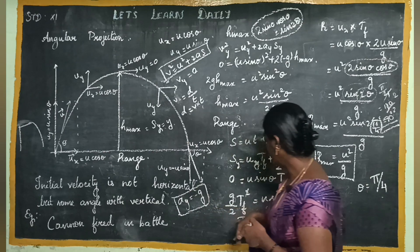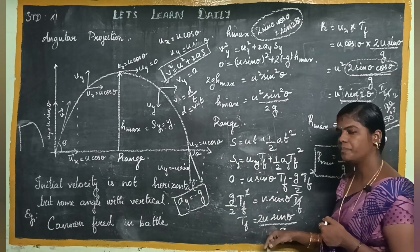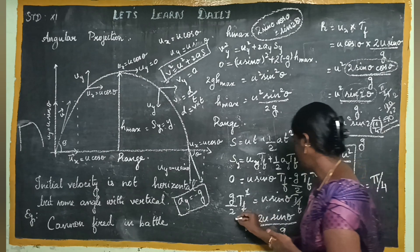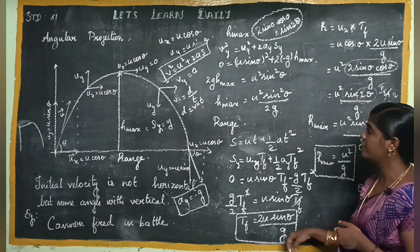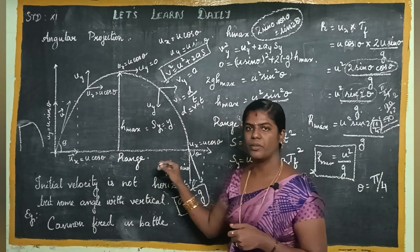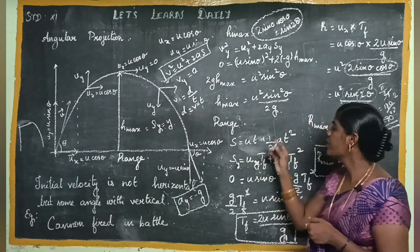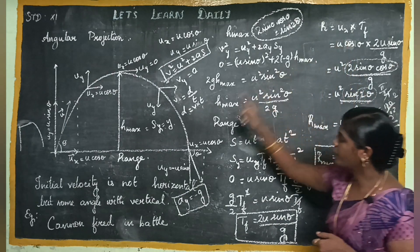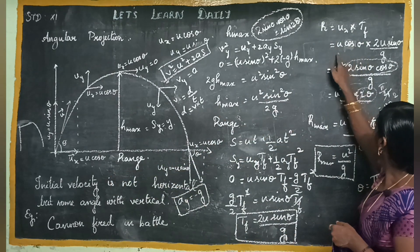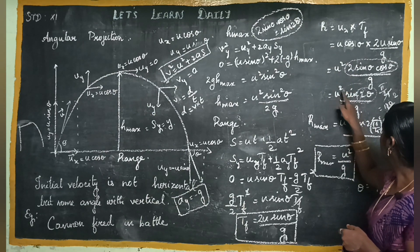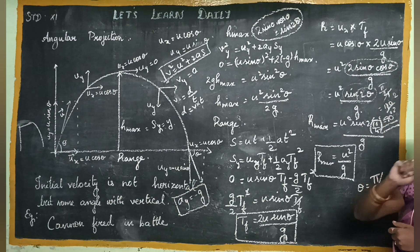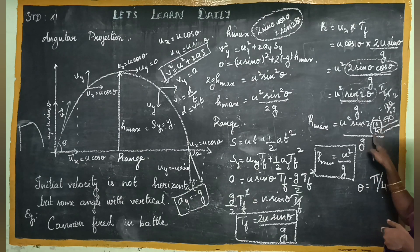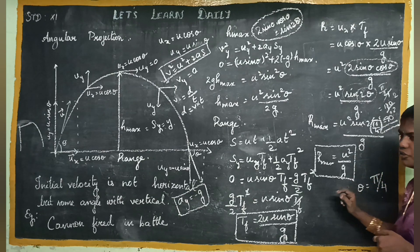So that is tf — from the second equation of motion, tf equals 2u sin theta by g. Distance equals velocity into time: velocity here is ux (u cos theta), multiplied by tf. Substituting both values gives R equals u squared sin 2 theta by g. With theta equal to pi by 4, the maximum range is u squared by g.